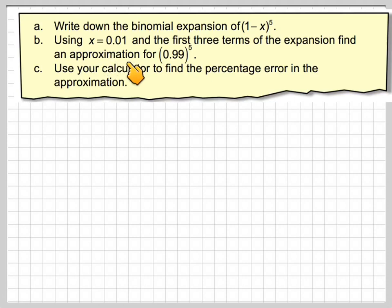Using x equals 0.01 and the first three terms of the expansion, find the approximation for 0.99 to the power of 5. Use your calculator to find the percentage error in the approximation.